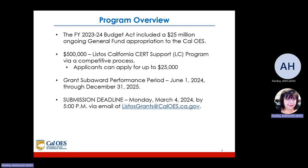The program overview: the FY 23-24 budget act included a $25 million ongoing federal general fund appropriation to Cal OES. $500,000 of that was for the LISTOS California CERT program LC program via a competitive process. Applicants can apply for up to $25,000. The grant subaward performance period is June 1, 2024 through December 31, 2025.